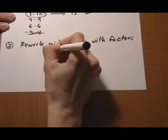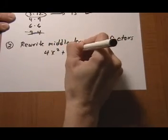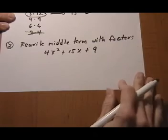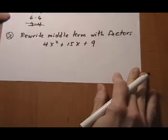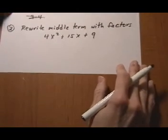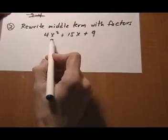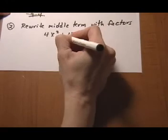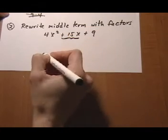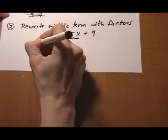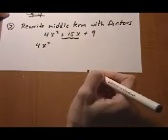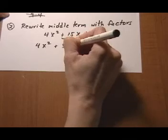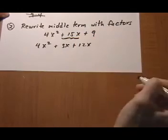So again, we started with 4x squared plus 15x plus 9. And we found that 3 times 12 worked for the factors. So we are going to break up this 15 into 3x plus 12x. So 4x squared comes down plus 3x plus 12x plus 9.